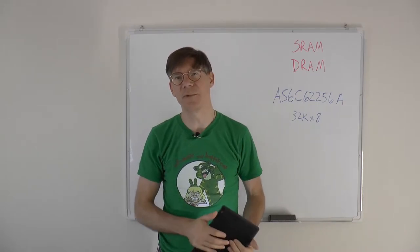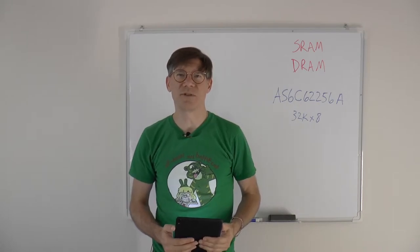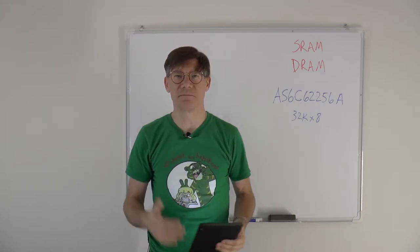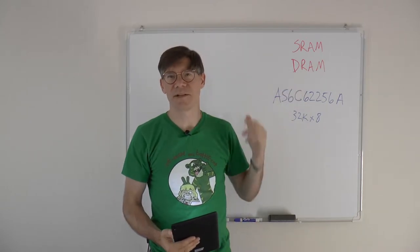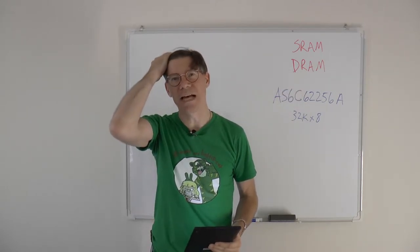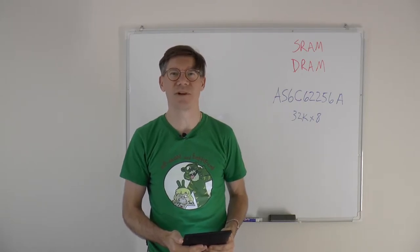Dynamic RAM is memory that you constantly have to read or refresh in order to keep the bits around. That's why it's called dynamic memory — because if you stop refreshing it, it goes away. It's very low power compared to SRAM. SRAM actively keeps each cell alive and active, so it takes a little more power, but it's very easy to interface with and you don't need a whole lot of circuitry around it.